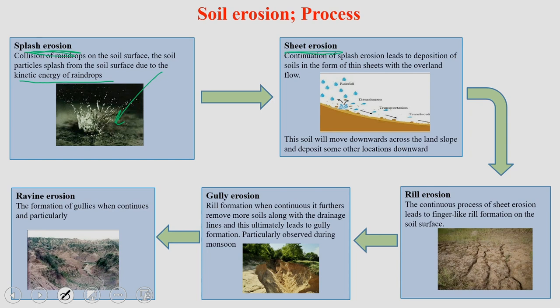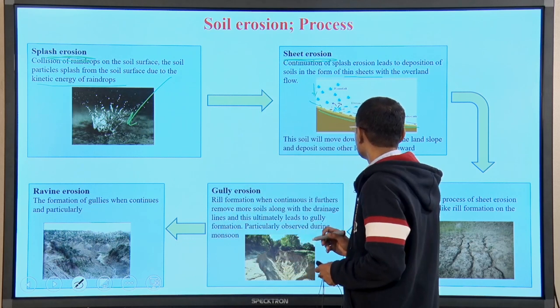Second is sheet erosion. 'Sheet' refers to a paper-like layer — just as a sheet of paper is thin. A thin layer of soil is removed by this erosion. It is a continuation of splash erosion which leads to deposition of soil in the form of thin sheets with the overland flow. As seen in the picture, rainfall hits the ground and across the slope the soil moves from top to below. When it gets detached, a thin layer forms at that lower level — we call this sheet erosion.